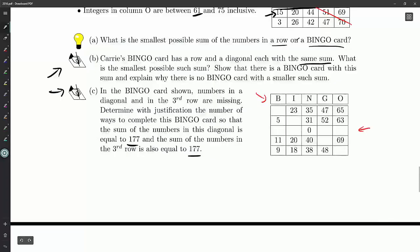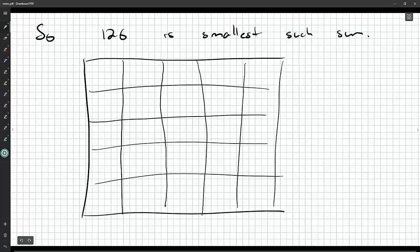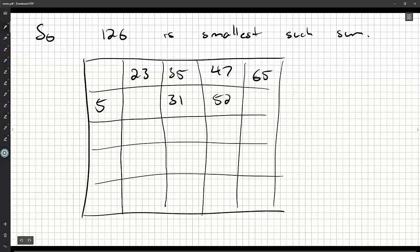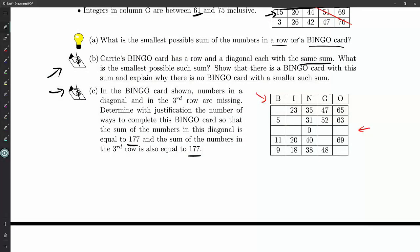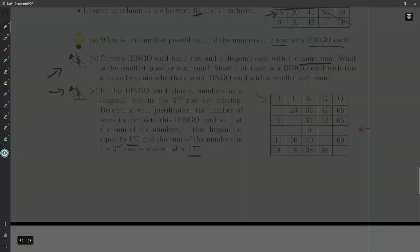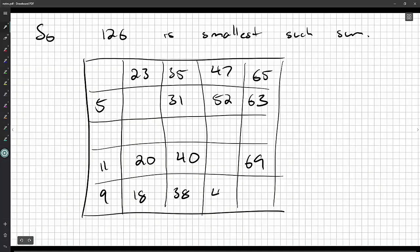Now they've got some numbers already worked out here. Certain numbers might not be available for what we're doing. We're going to have to keep track of that. Let's copy the numbers. They have 23, 35, 47, 65, 31, 52, 63. There's a 69 down there. 11, 20, 40. And finally 9, 18, 38, 48. Can't forget that zero in the middle.